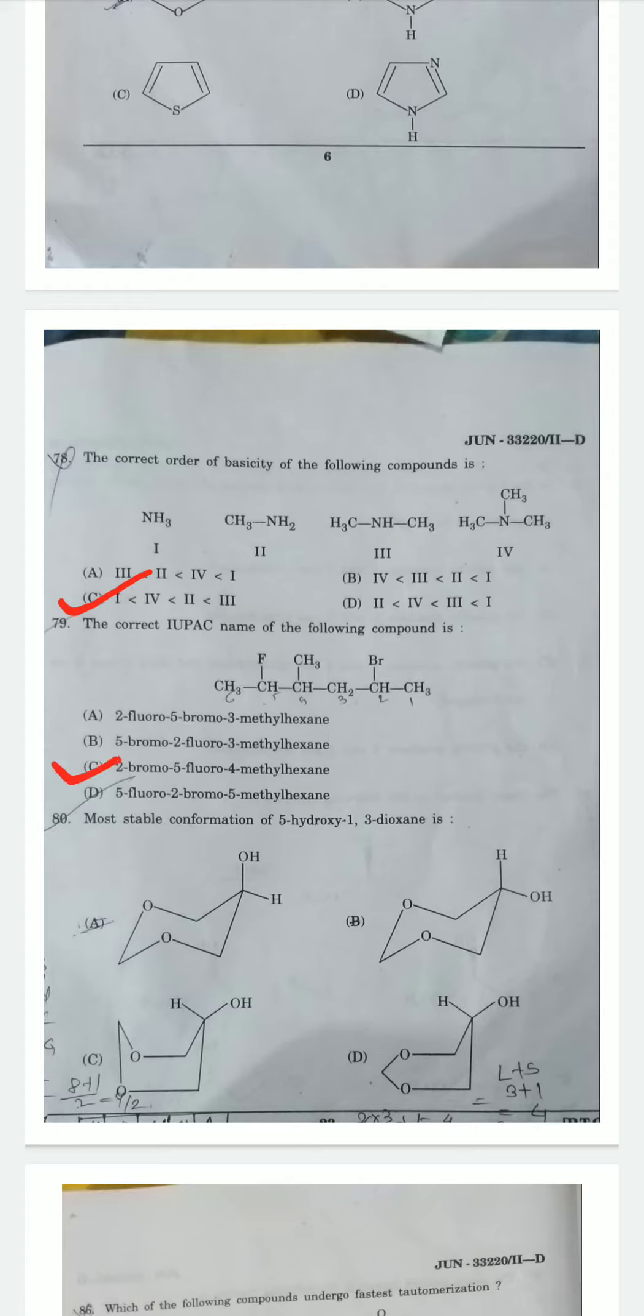Question 8: Most stable conformation of 5-hydroxy-1,3-dioxane. The most stable conformation is chair. Among options, half chair and twist boat are less stable. Between options A and B, option A has hydroxyl group in axial position and option B has hydroxyl group in equatorial position. The hydroxyl group with oxygen can form intramolecular hydrogen bonding, and this increases stability. Therefore axial hydroxyl group is most stable. Option A is correct.